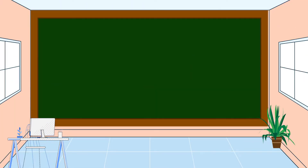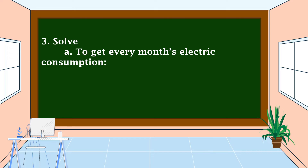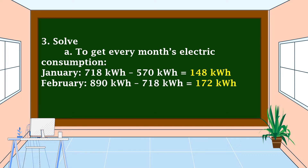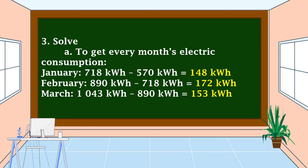Now we carry out the plan. For Letter A, to get each month's electric consumption: January is 718 minus 570, which equals 148 kWh. February is 890 minus 718, which equals 172 kWh. March is 1,043 minus 890, which equals 153 kWh.